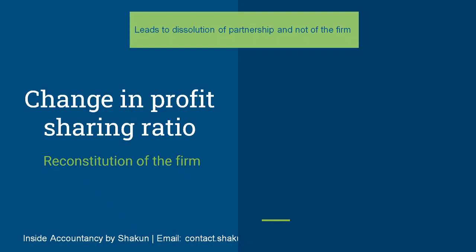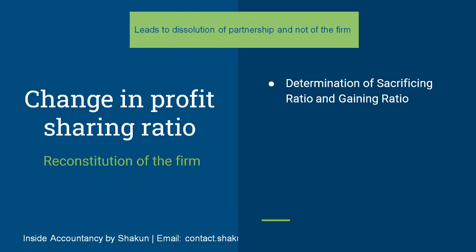The existing partnership agreement ends and a new agreement comes into effect — that is, the agreement changes and a new agreement is formed but the partnership firm does not come to an end. Whenever there is a Change in Profit Sharing Ratio, it leads to reconstitution, and under that we need to give effect to certain issues. I have talked about the Change in PSR and calculation of sacrificing ratio and gaining ratio in my previous video.